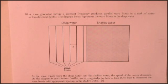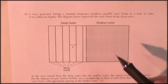Well this is going to be question 65 of the June 2011 exam. Getting close to the end here. It says a wave generator having a constant frequency produces parallel wavefronts in a tank of water at two different depths. The diagram represents the wavefronts going from deep water to shallow water.